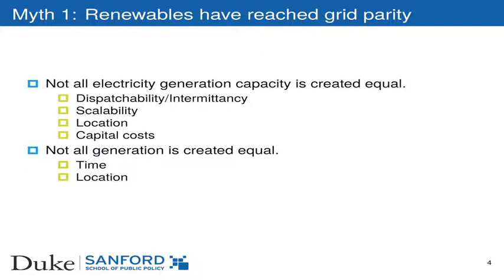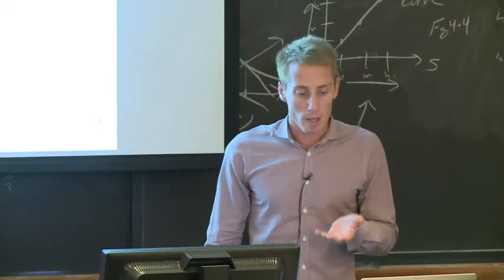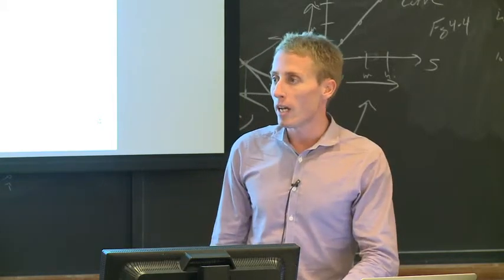And as Dahlia alluded, well as not alluded to, she mentioned in some detail and quite confidently, so I'm not going to belabor this point. This generating capacity is going to vary according to whether it's dispatchable or intermittent. Coal and natural gas are dispatchable, the renewables are intermittent. How scalable is the technology? Hydro is a fairly cheap renewable type of technology, but it's not very scalable. We'd have to build more dams and so forth in order to scale up hydropower. Where is the generating capacity located and what are the costs of that generating capacity? And then the generation itself, that is the actual electricity, varies according to the time and location that it's produced. And so we start to account for some of these differences in the generating capacity. It becomes clear that renewables aren't yet at grid parity.